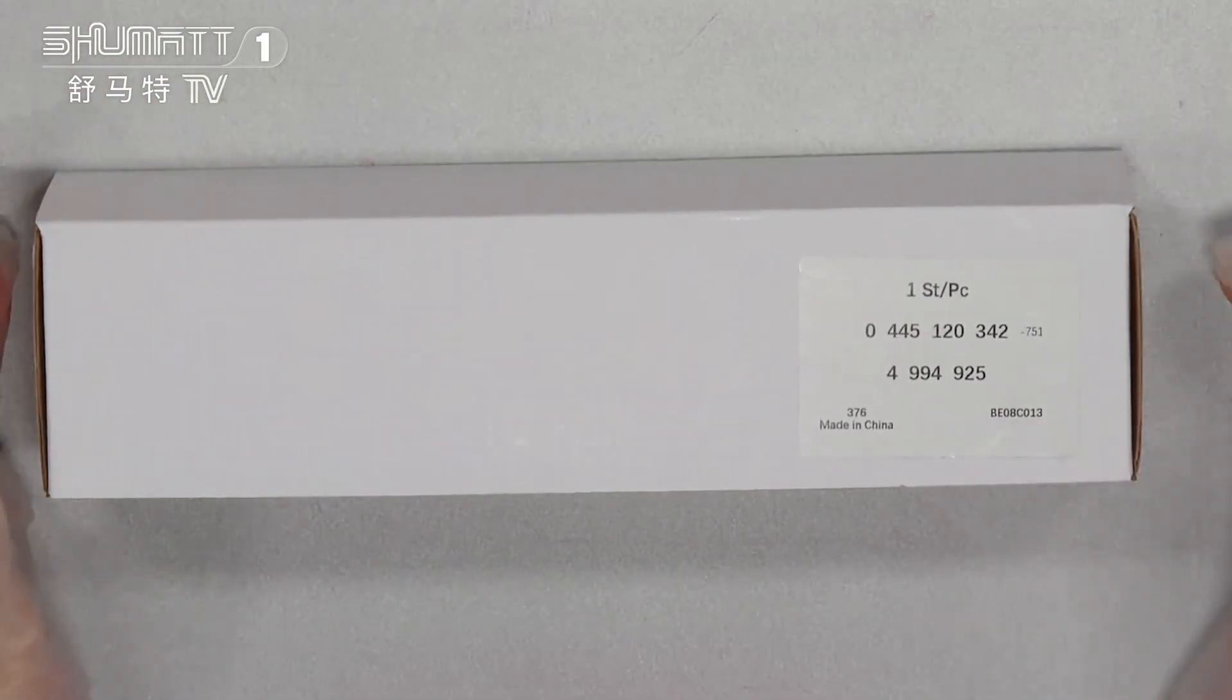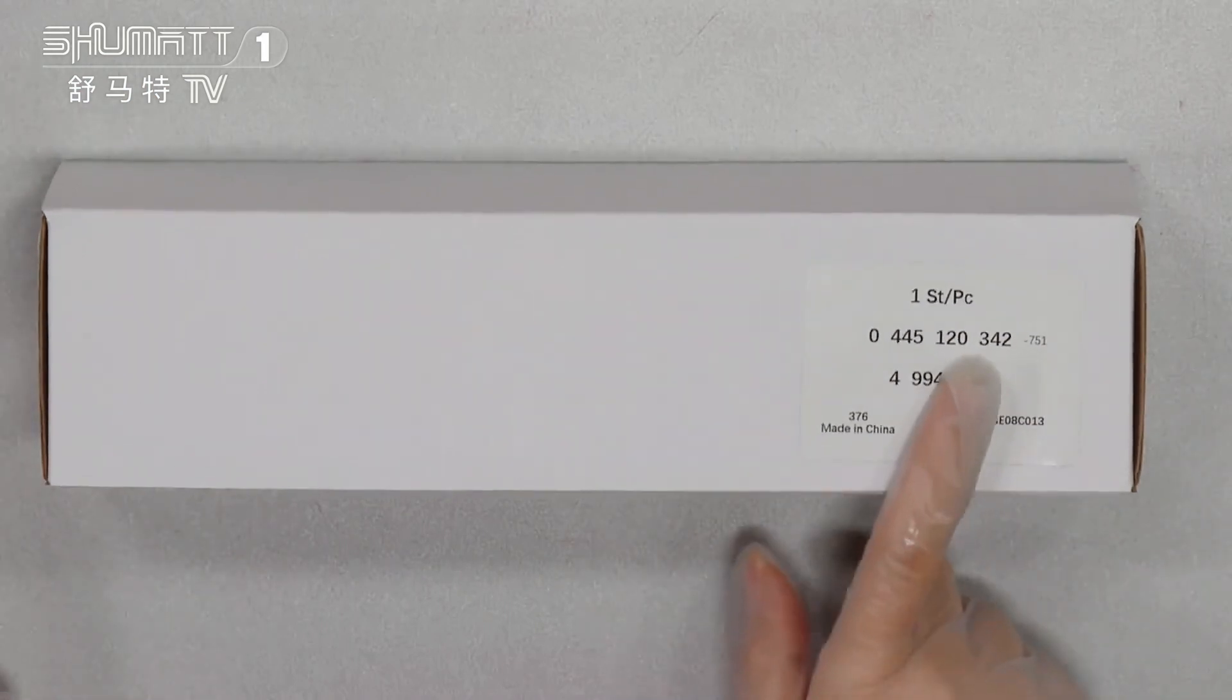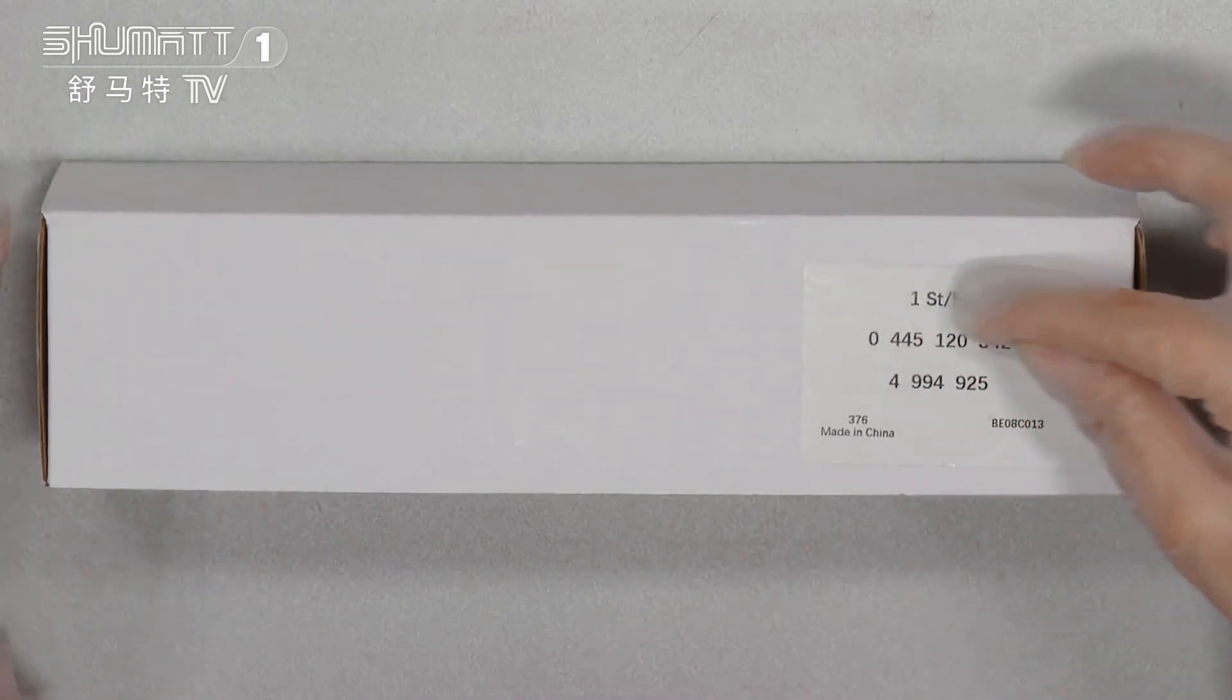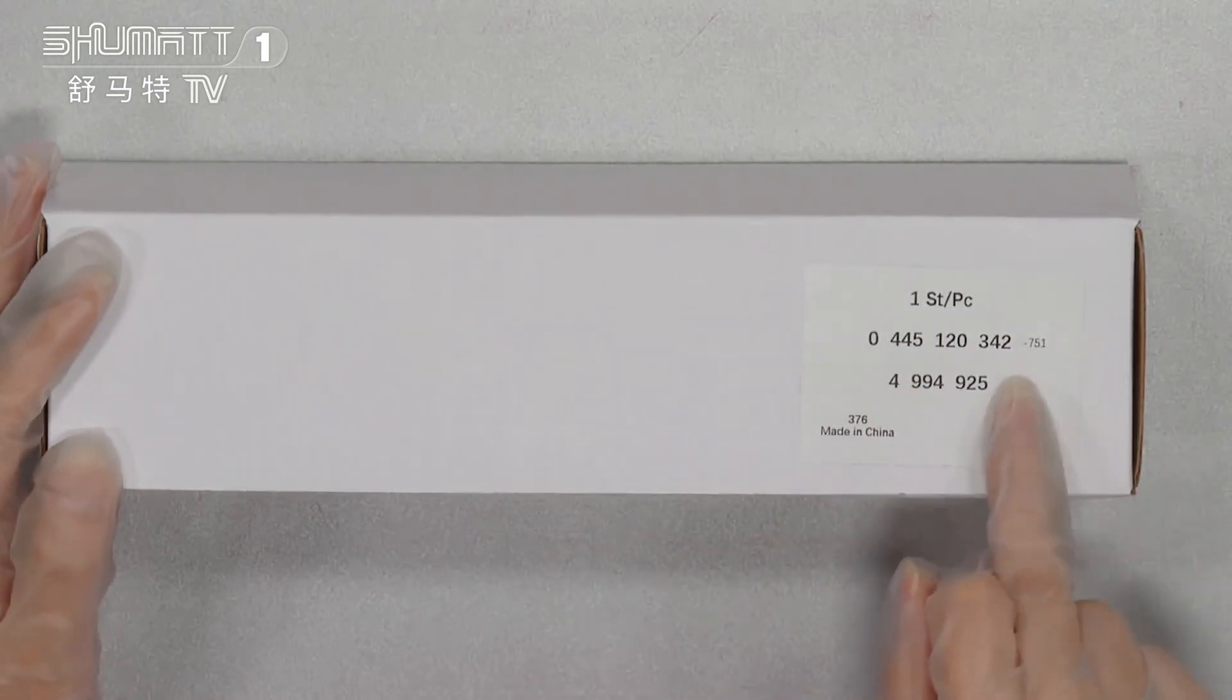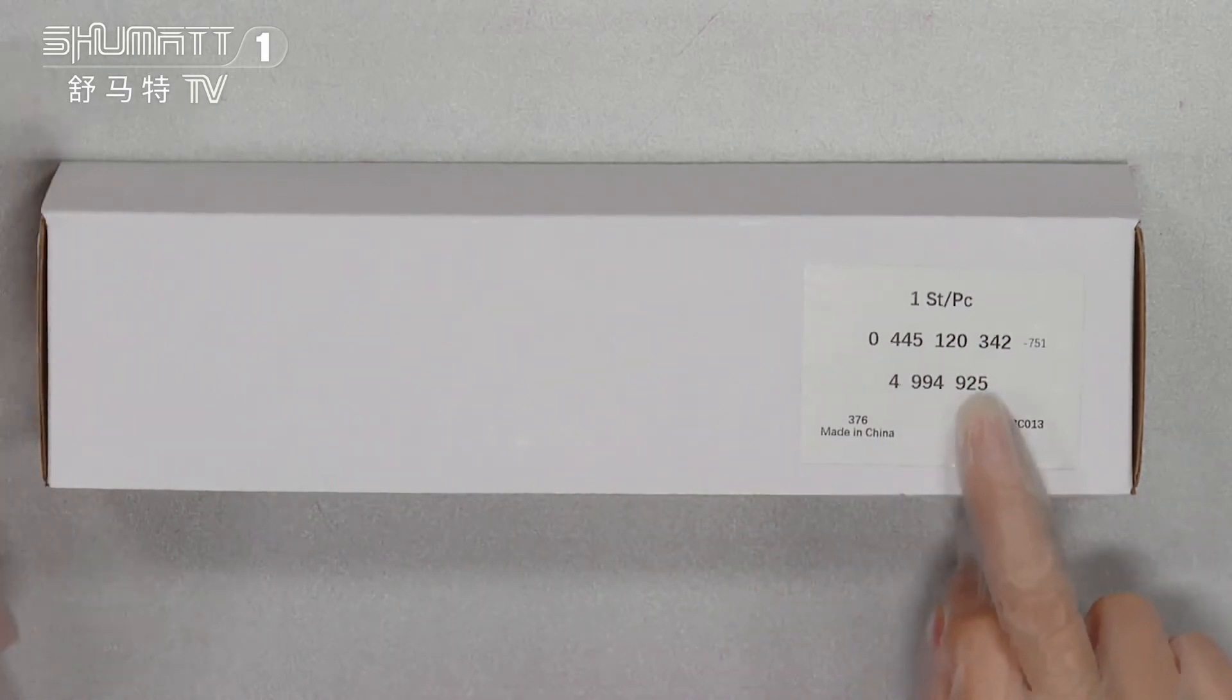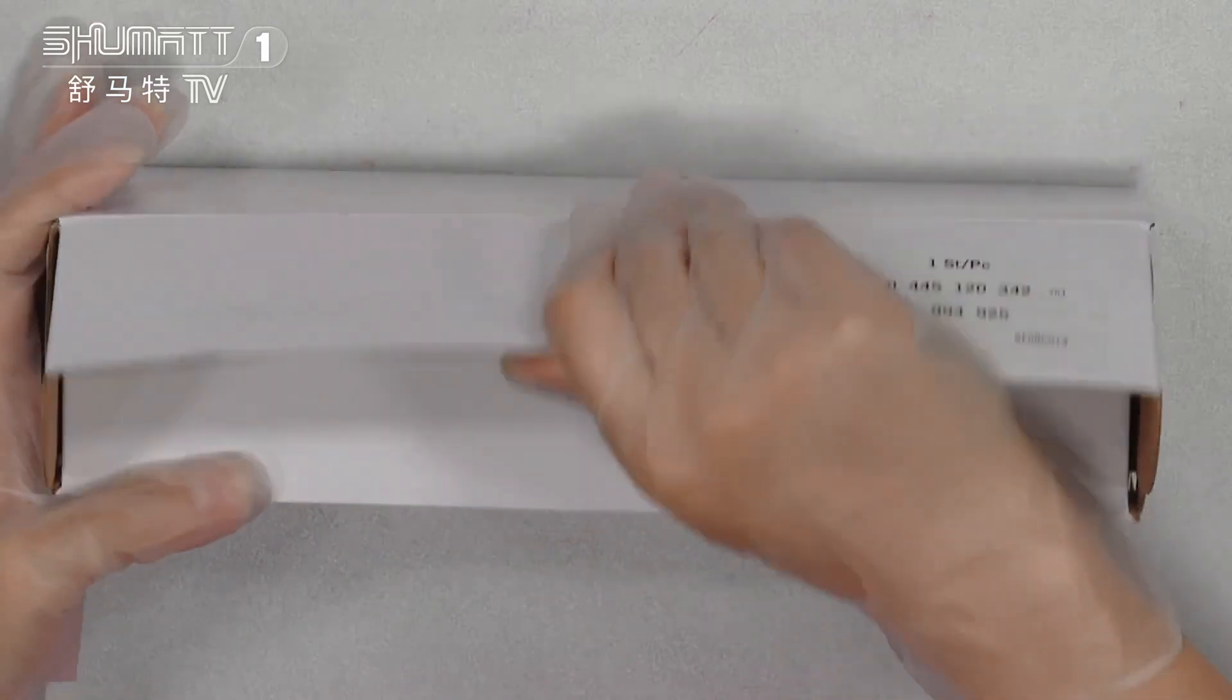First, as you can see, these are neutral white boxes also labeled on this part. One piece, one side each piece is part number 0445120342. If you want to print with your own logo, label, packaging bag and so on, contact us. Customize the services for you.